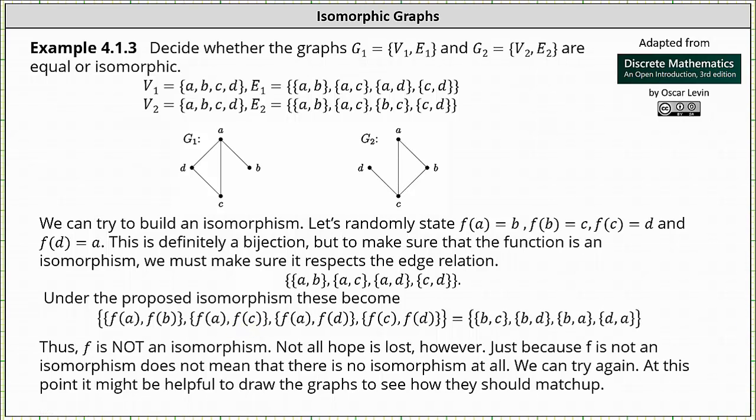And now if we have an isomorphism, this edge set must match the edge set E2. And notice how we have a problem. Notice the edge set under the proposed isomorphism has the edge BD and BD is not an edge in the graph of G2 or not an edge set in E2. This indicates F is not an isomorphism.